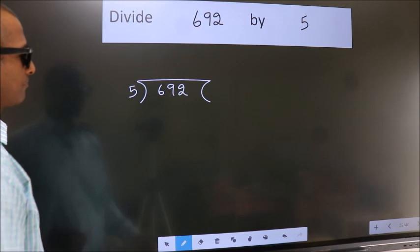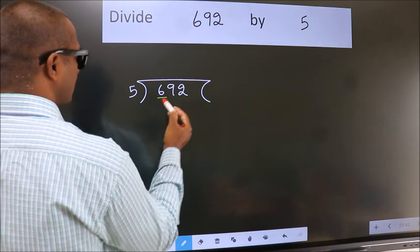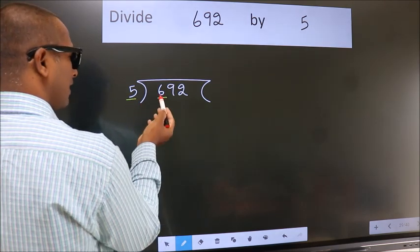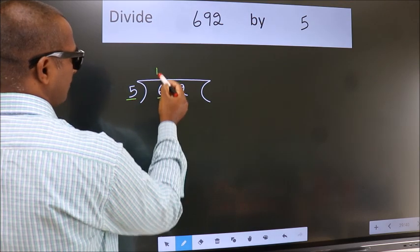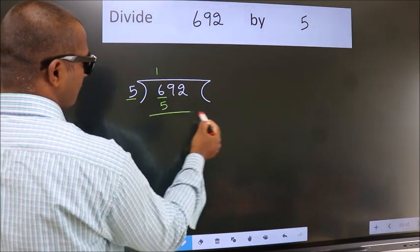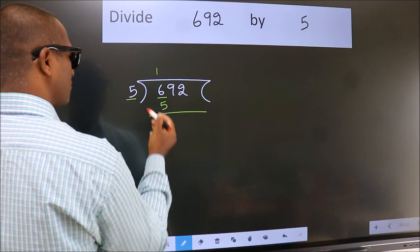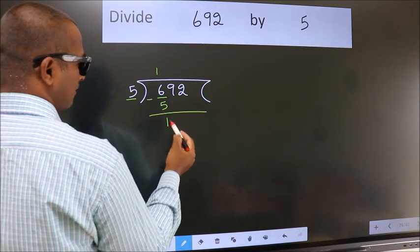Next, here we have 6, here 5. A number close to 6 in the 5 table is 5 times 1 is 5. Now we should subtract. We get 1.